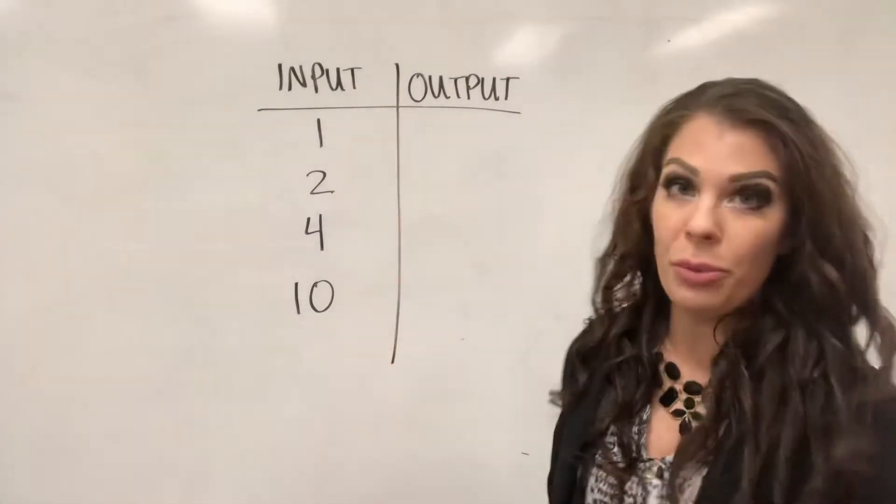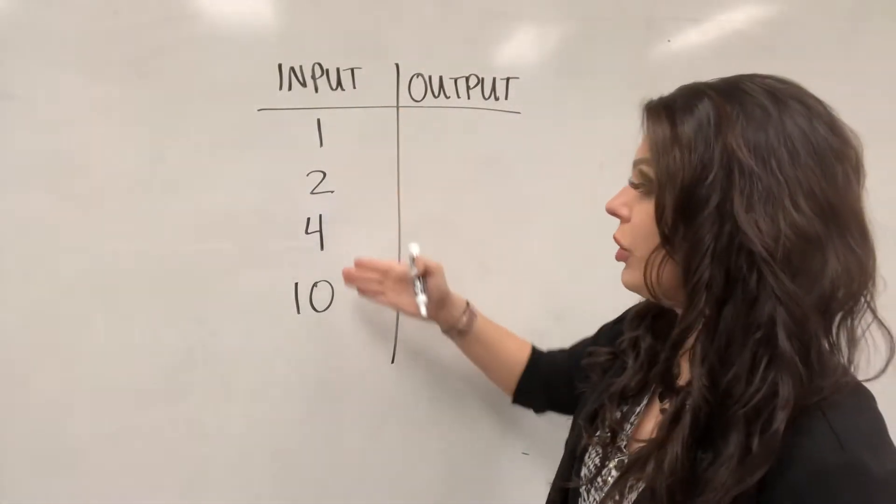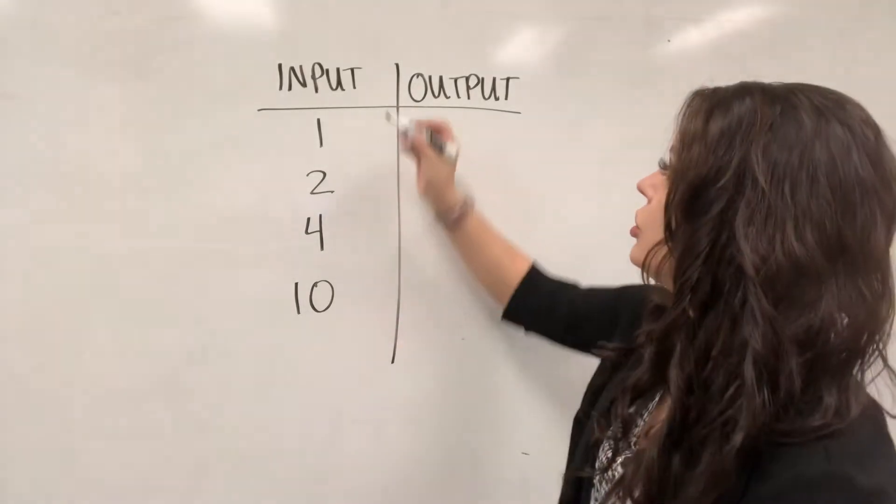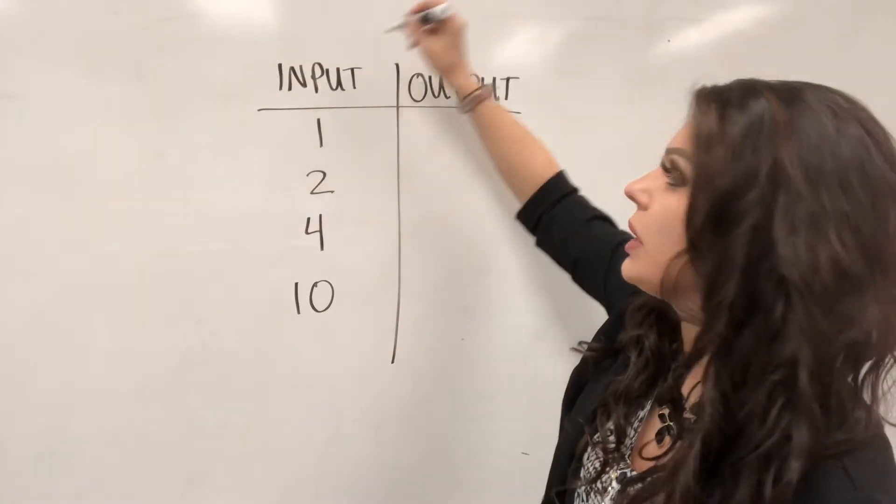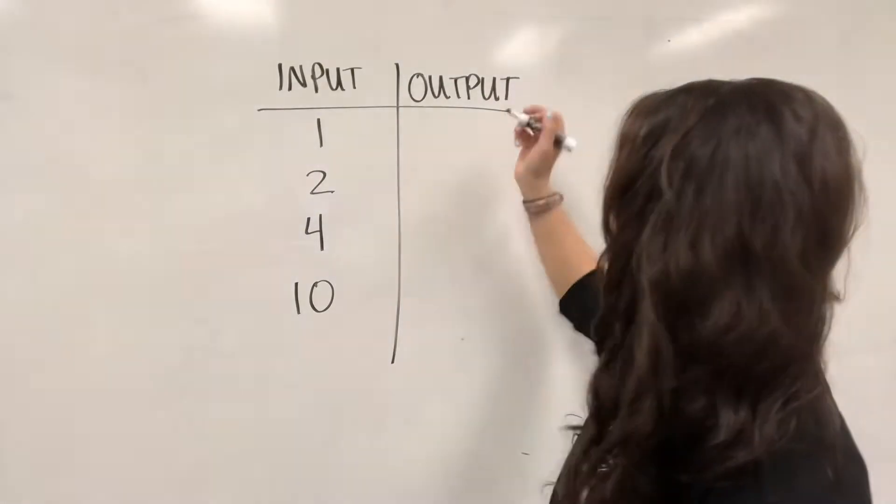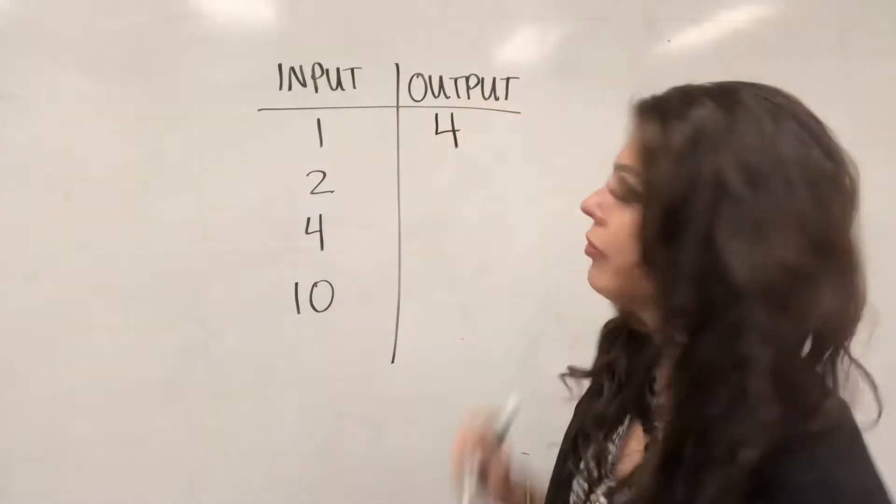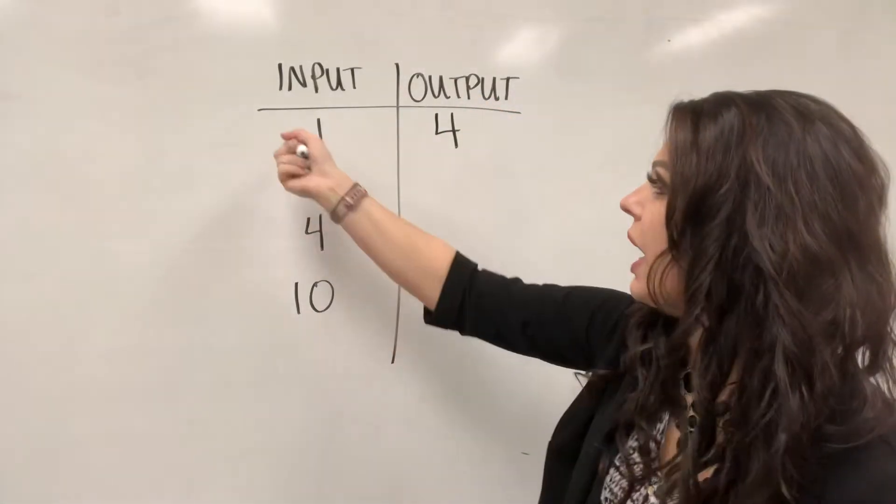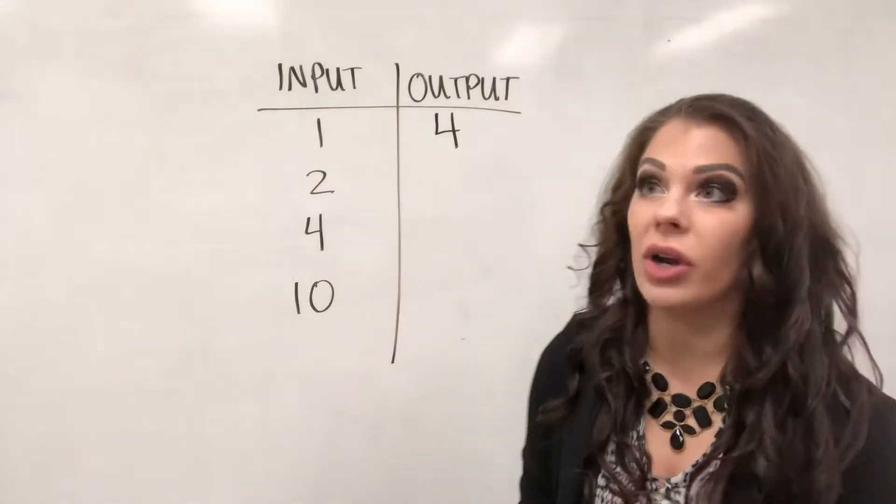So first of all we have our input numbers: 1, 2, 4, and 10. Okay, so if I have one of something, what happens to it to get my output 4? Okay, so I had 1, now I have 4.